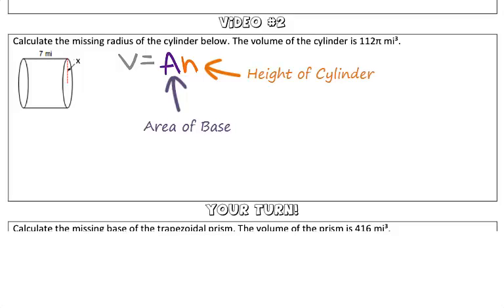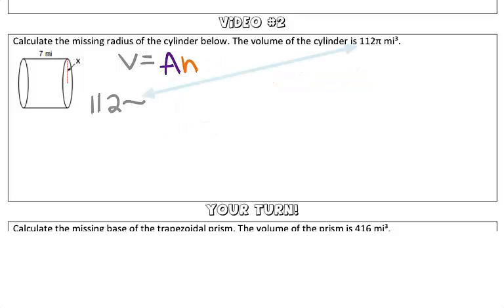We know that the volume is 112π miles cubed, so we're going to substitute that in for our volume. 112π is equal to the area of our base. Our base of this prism is a circle, so to calculate the area of a circle, we know our formula is πr², and we're going to multiply that by the height of the cylinder, or the distance between the two circles, which is 7 miles.